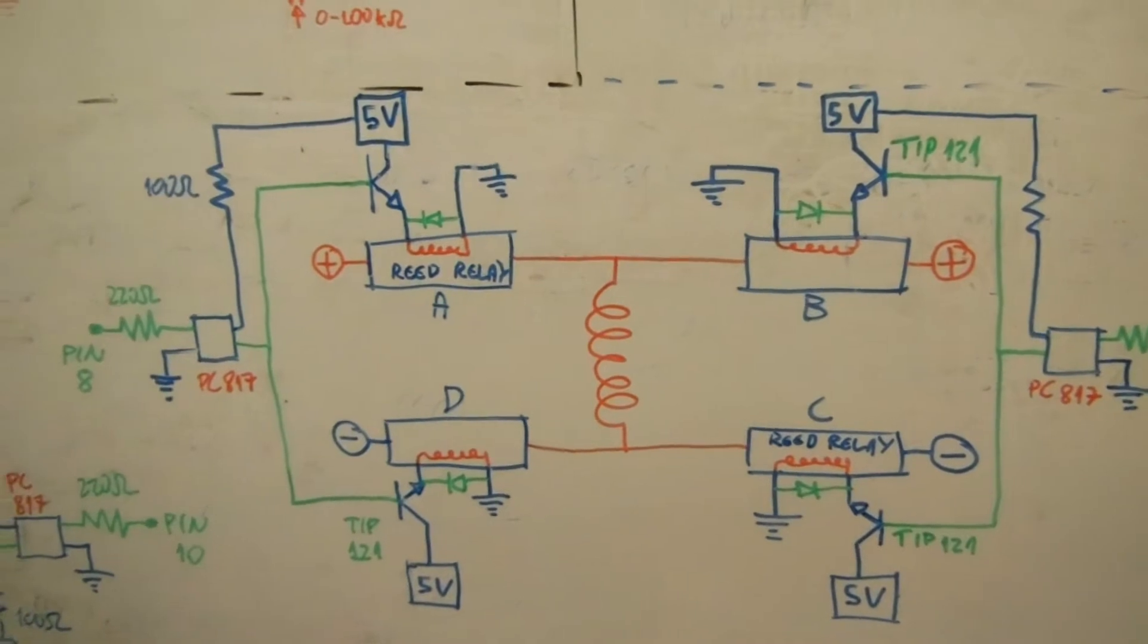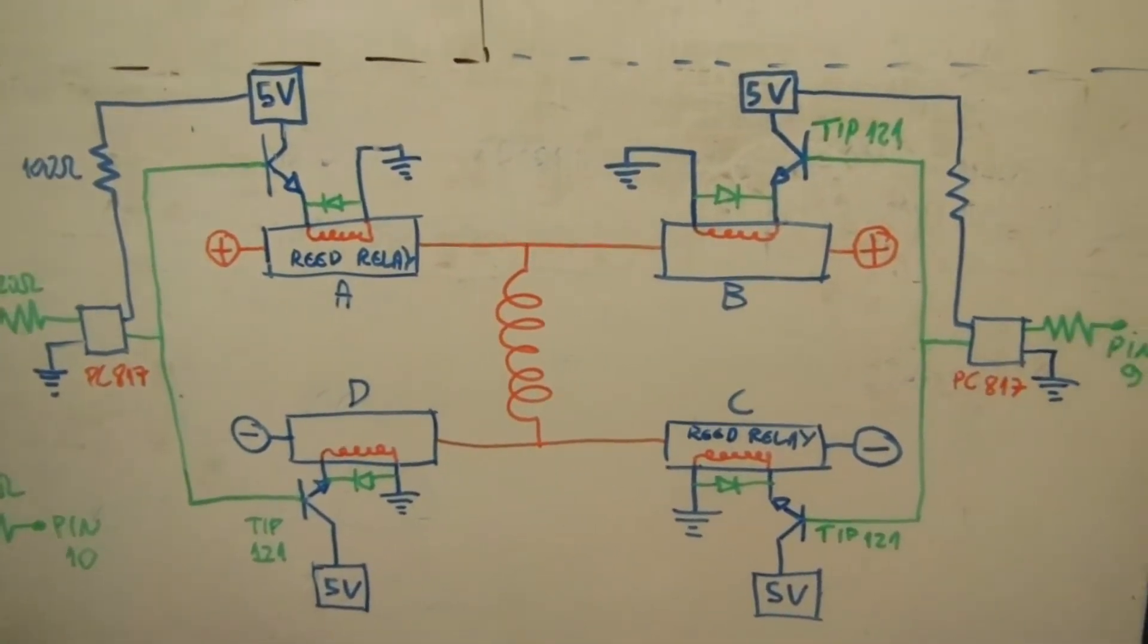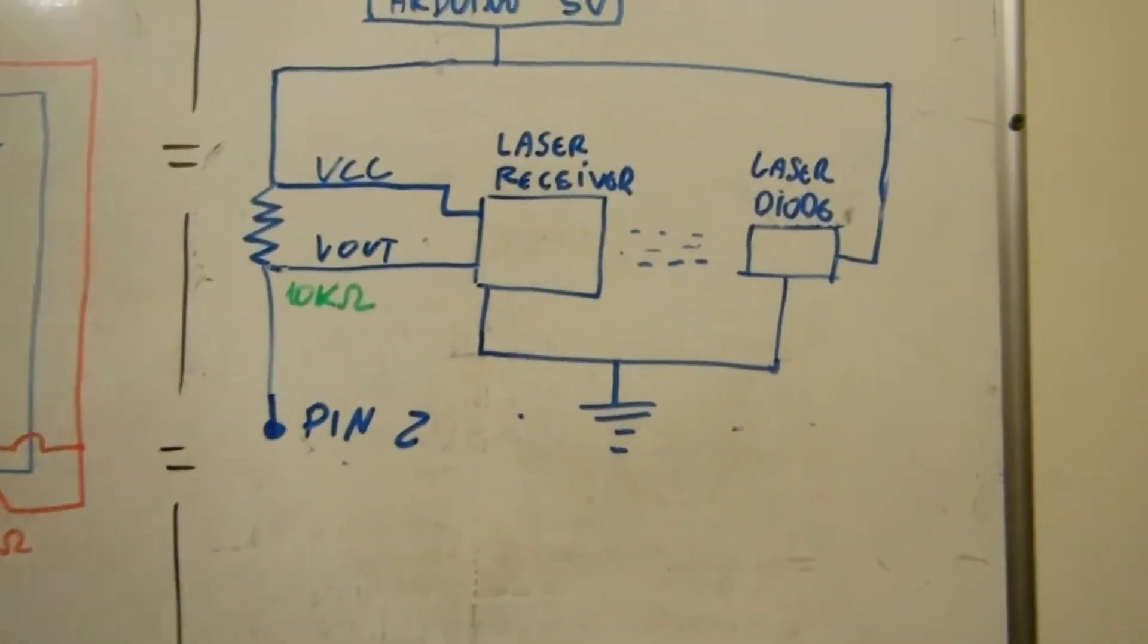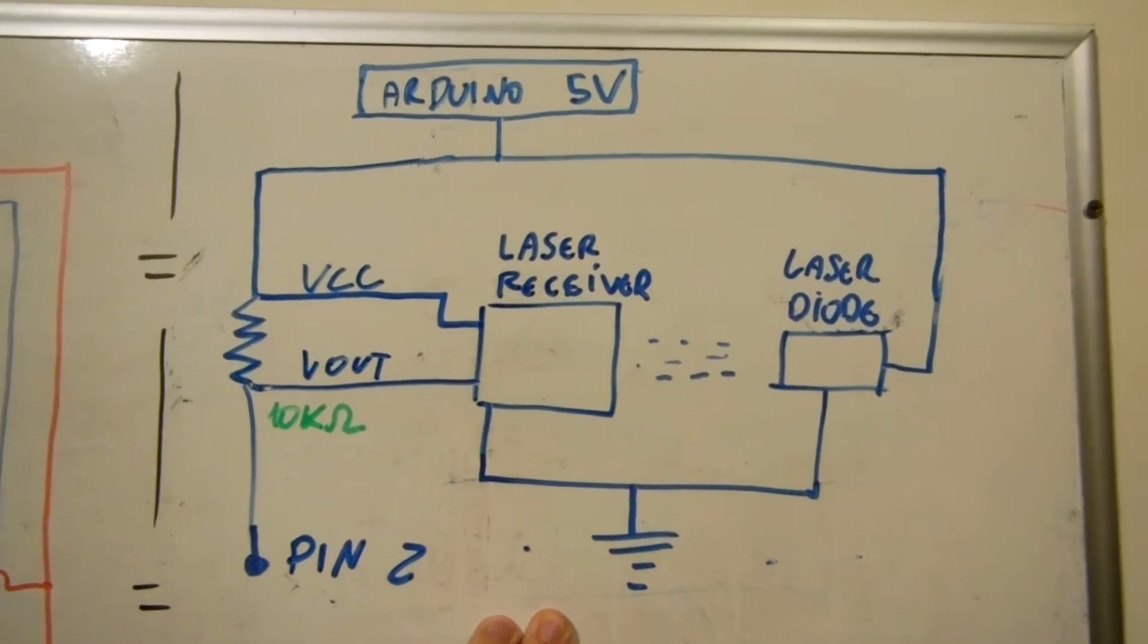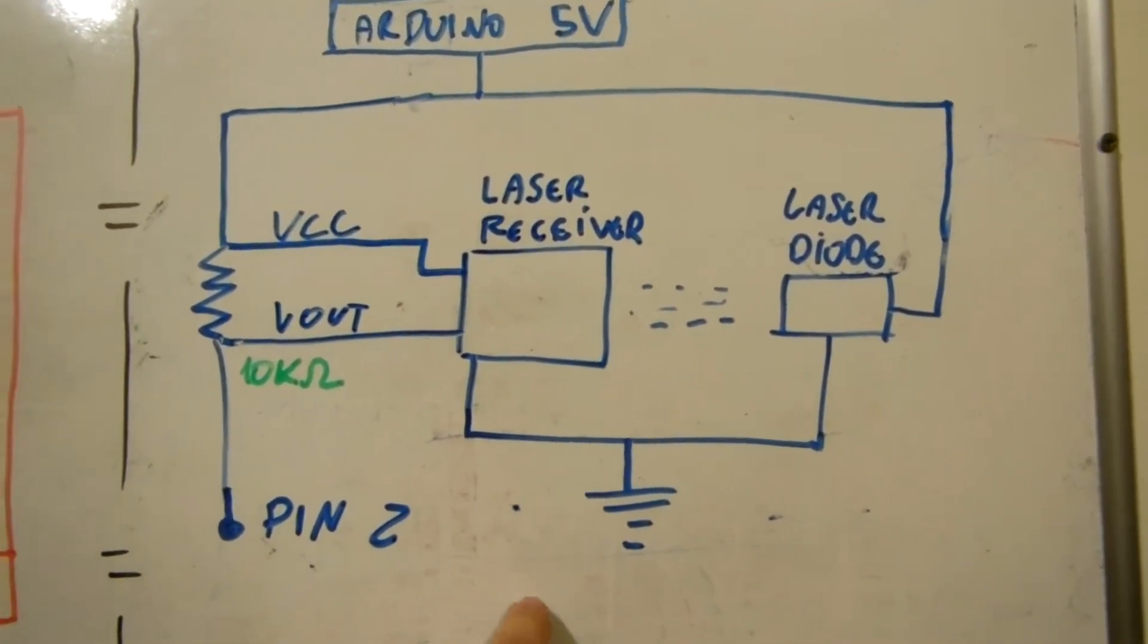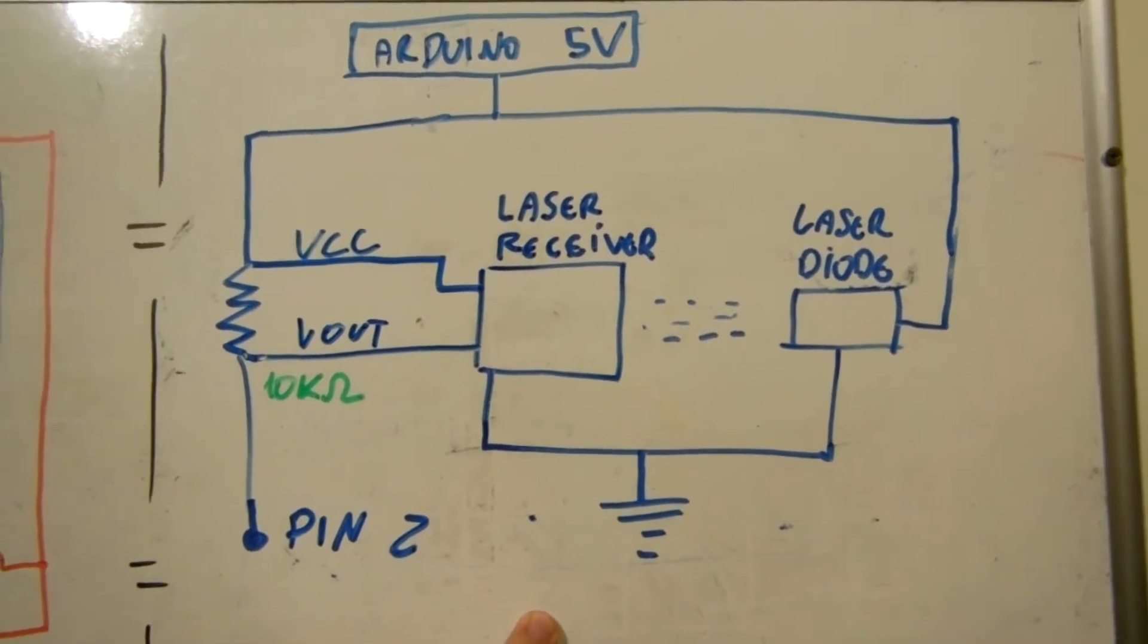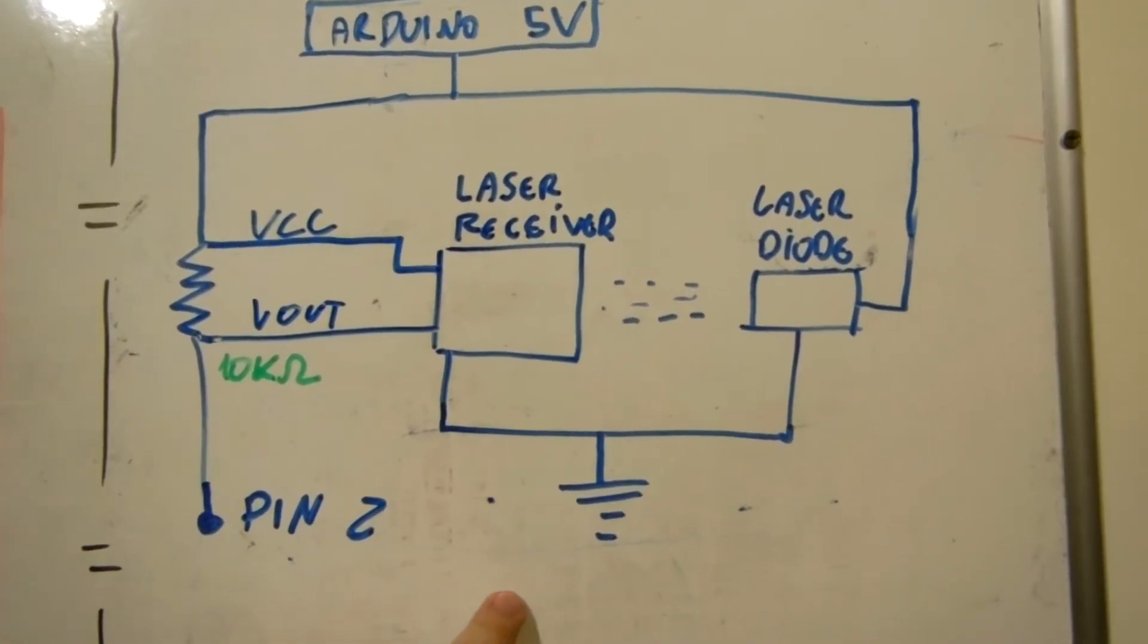This is all controlled by a program that I wrote in Arduino and this part here is responsible to control the circuit, to control the laser diode and laser receiver that is necessary to determine the rotor rotation. This is used with the rotary encoder wheel.